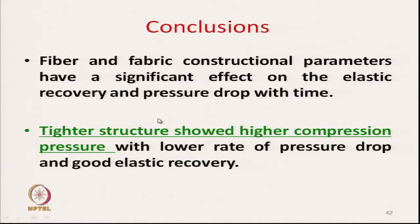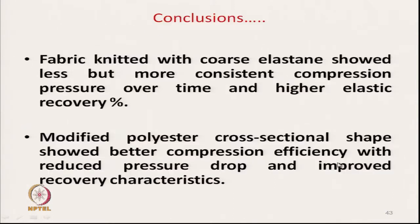In conclusion, fibre and fabric construction parameters have a significant effect on elastic recovery and pressure drop with time. Tighter structure shows higher compression pressure with a lower rate of pressure drop and good elastic recovery. Fabric knitted with coarse elastane shows more consistent pressure over time and higher elastic recovery. Modified polyester cross-sectional shape shows better compression efficiency with reduced pressure drop and improved recovery characteristics.